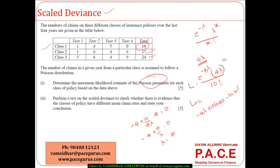Which gives me my lambda is 10 by 4 or 2.5, so lambda 1 is around 2.5. The same way I can go with lambda 2: 17 by 4 which will give me 4.25, and I'll get lambda 3 also 24 by 4 which will give me 6.